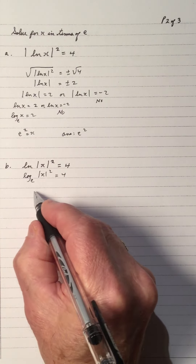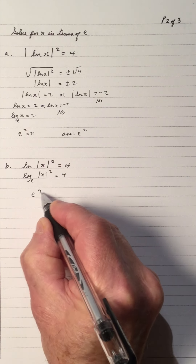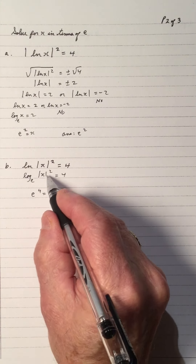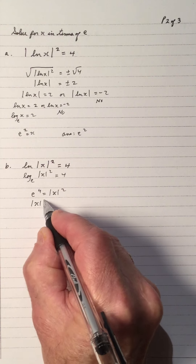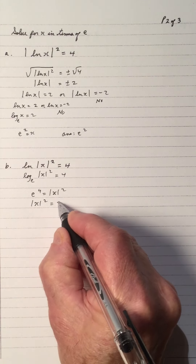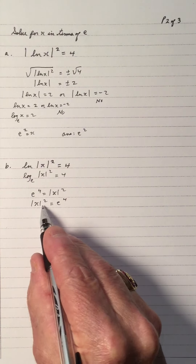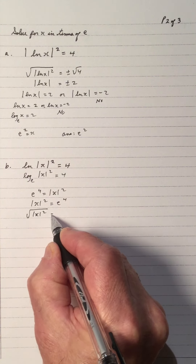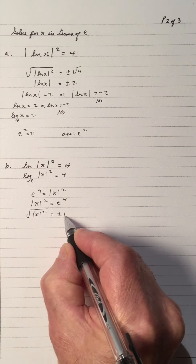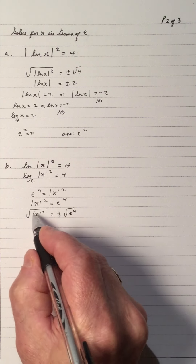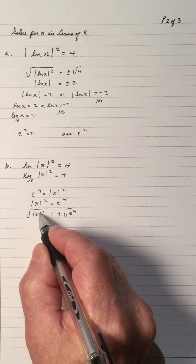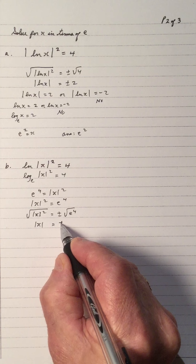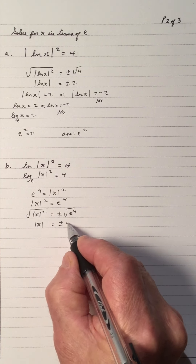I change it to: e to the fourth power equals the absolute value of x squared — base, exponent, number. Rearranging so x is on the left side, I now have a square, so I take the square root of each side: plus or minus square root of e to the fourth. The square root of |x²| is just |x|, and plus or minus square root of e to the fourth is e².